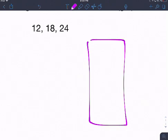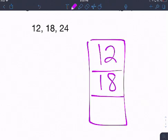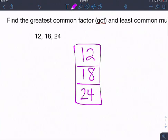And we're going to practice it the way that we learned it in class with our generic rectangle. So I'm going to go ahead and make my rectangle, and I'm going to put 12, 18, and 24 on the inside. And I'm trying to figure out what number goes into all three of these evenly.